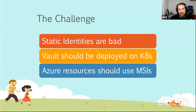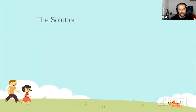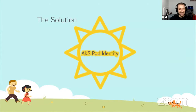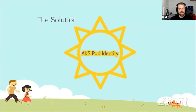These are all the challenges we want to meet when deploying Vault within the context of Azure. The solution is AKS Pod Identity. The idea is that AKS Pod Identity allows pods within your Azure Kubernetes Service cluster to use managed service identities to access other things in Azure.